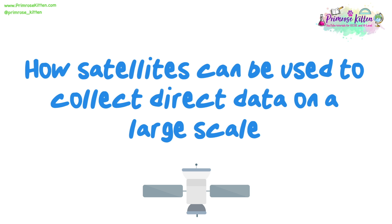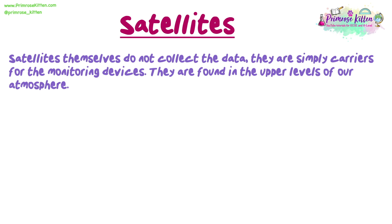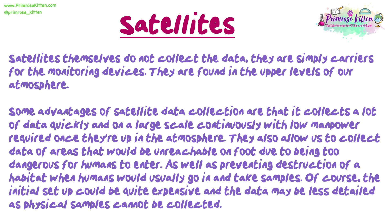Now we're going to look at how satellites can be used to collect direct data on a large scale. Satellites themselves do not collect the data — they are simply carriers for the monitoring devices, found in the upper levels of our atmosphere. Some advantages of satellite data collection are that it collects a lot of data quickly and on a large scale, continuously, with low manpower once they are up in the atmosphere. They also allow us to collect data of areas that would be unreachable on foot due to being too dangerous for humans to enter, as well as preventing destruction of a habitat. Of course, the initial setup could be quite expensive, and the data may be less detailed as physical samples cannot be collected.